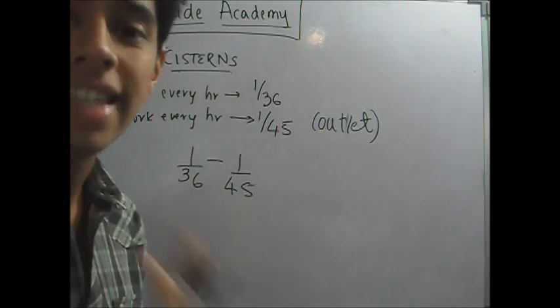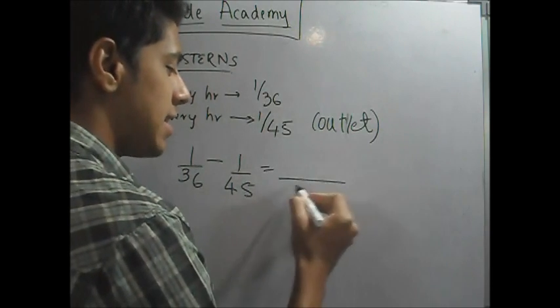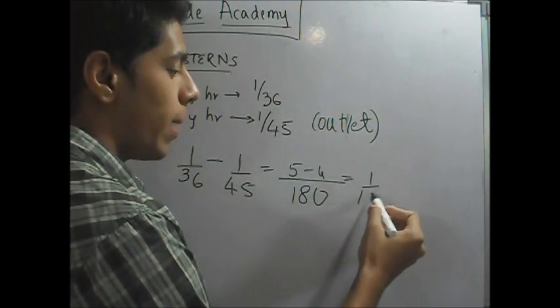This minus sign? Because it's negative work. It's an outlet pipe. It empties the tank. Now, if you take this LCM, it will still remain 180. This will be 5 minus 4. It will be 1 over 180.